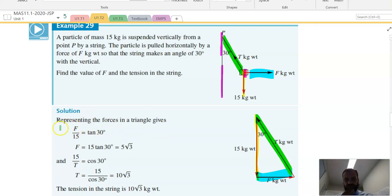So if we want to find the force being applied sideways, then we can just do like a tan ratio. Tan of this angle is equal to opposite over adjacent, F over 15. 15 tan 30, that's going to be 5 root 3. You should be comfortable being able to do that without a calculator, that one.